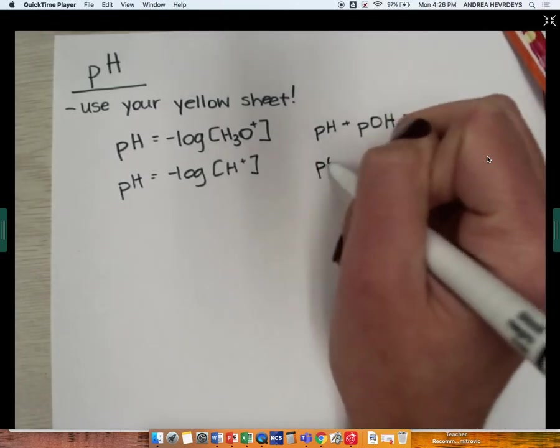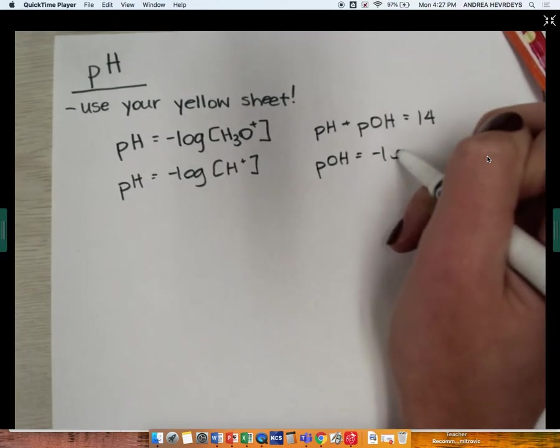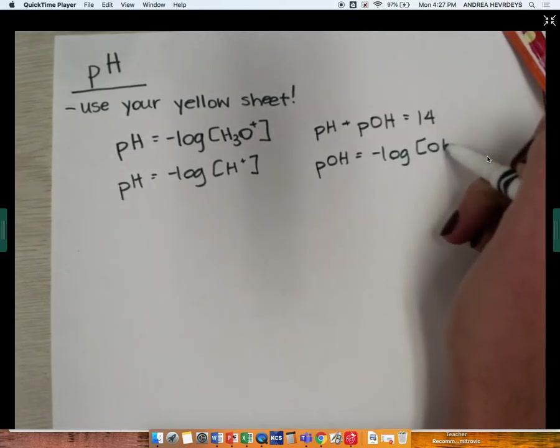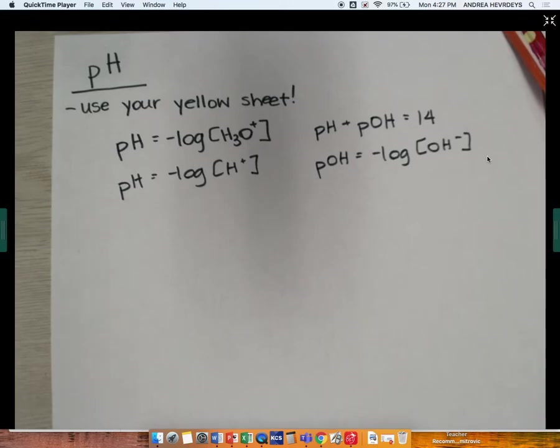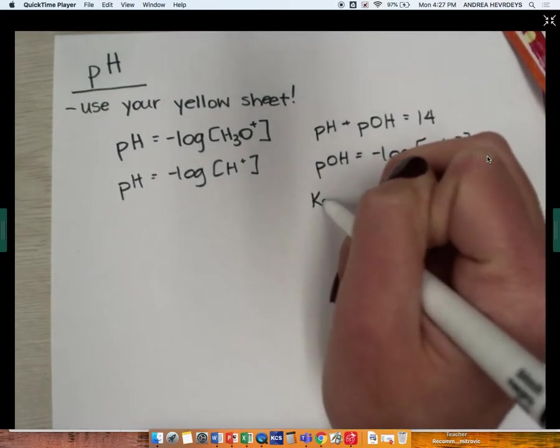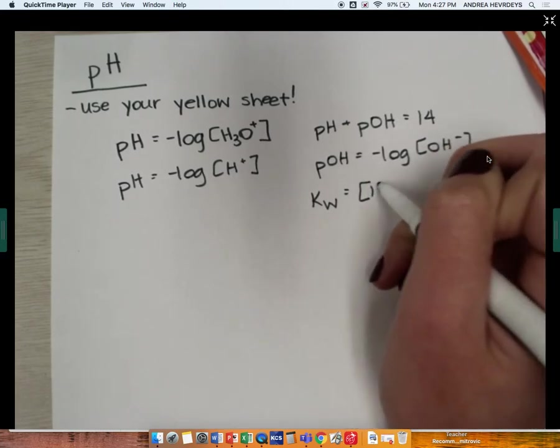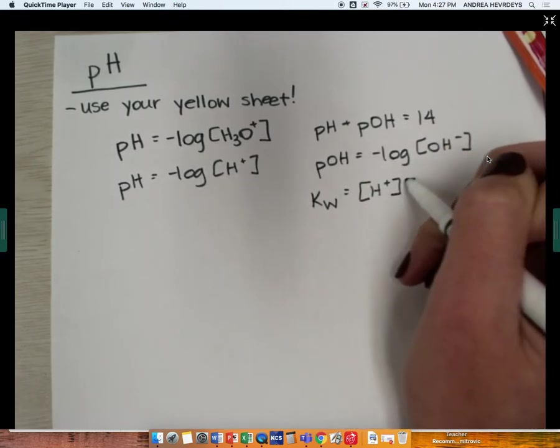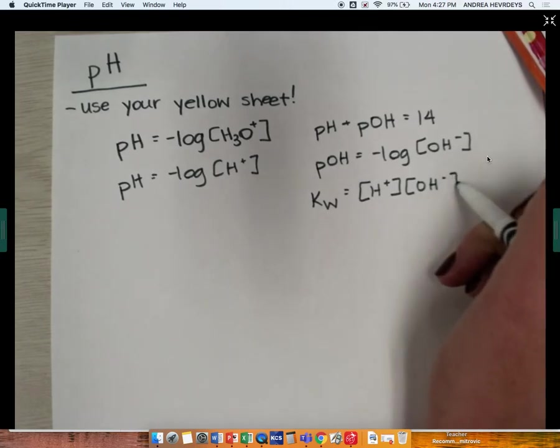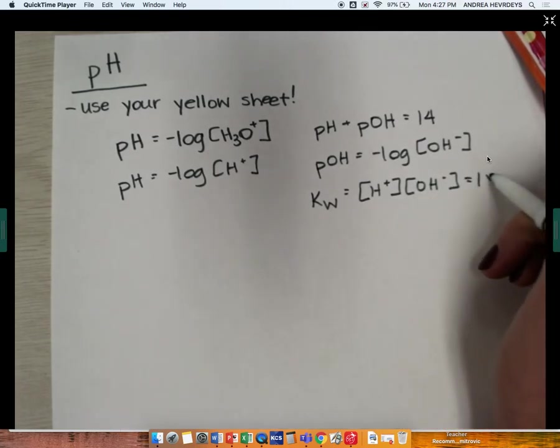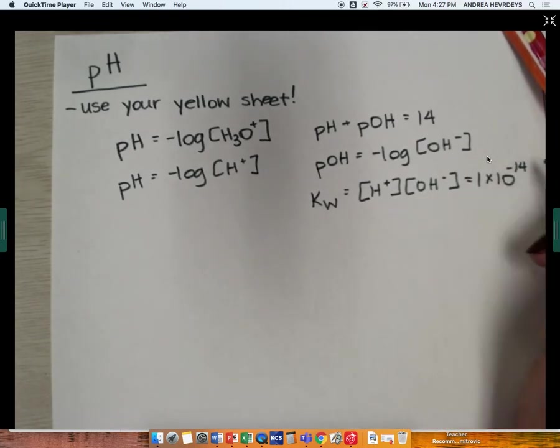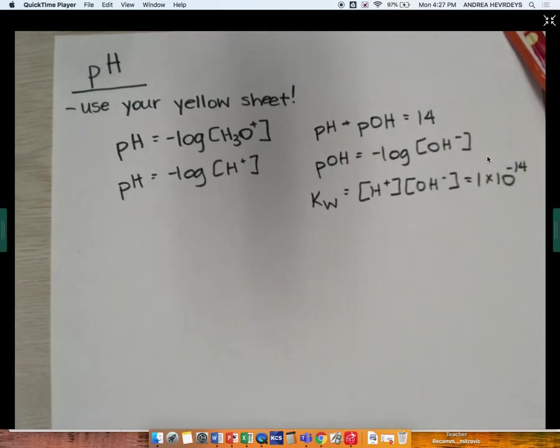You're given that the pOH is equal to the negative log of the hydroxide ion concentration. And they also give you one called Kw, think of water, which is that the concentration of the hydrogen times the concentration of the hydroxide is 1 times 10 to the negative 14, as we see related there.